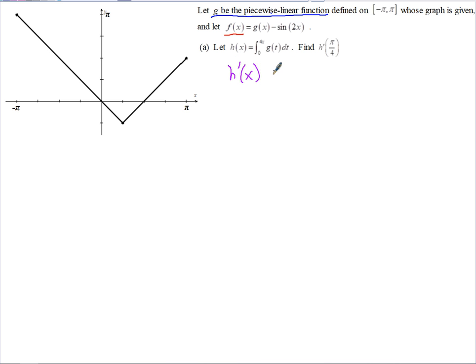So h'(x) would equal, well if we take the derivative of this side, we have to take the derivative of a definite integral. We've got d/dx, the derivative with respect to x is our variable, integral from 0 to 4x. Inside that we've got g(t)dt. So here we're going to use our second fundamental theorem of calculus.